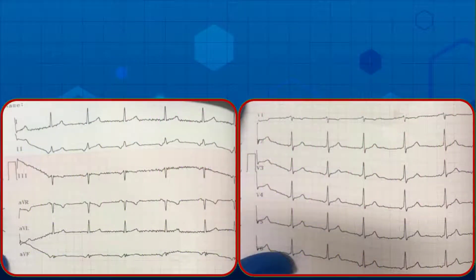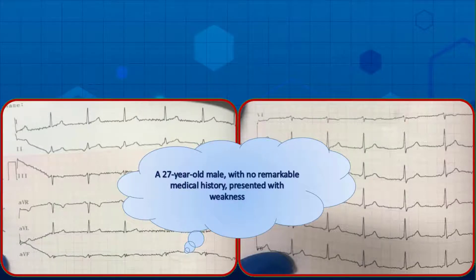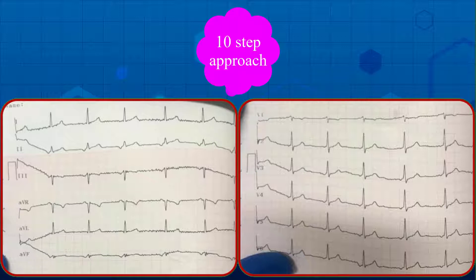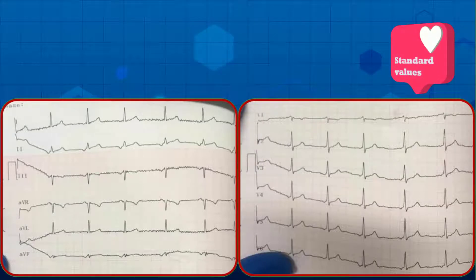This EKG is taken from a 27-year-old male with no remarkable medical history who presents with weakness. The physical examination is completely normal, and an EKG is obtained. What do you think about the strip? Does it need any medical intervention? As usual, to interpret an EKG properly, apply the 10-step approach.